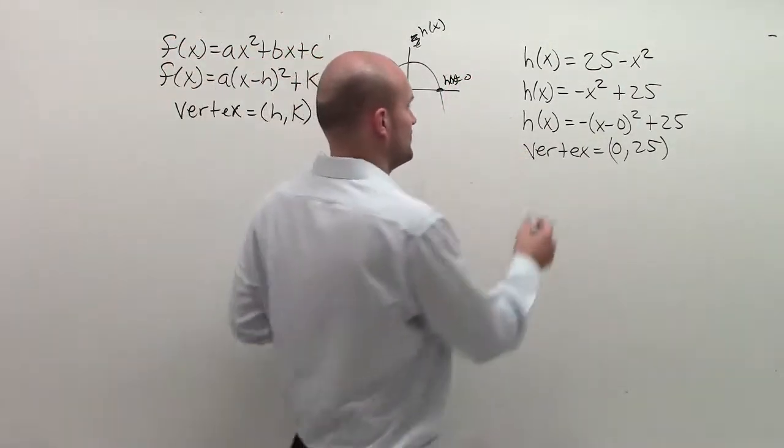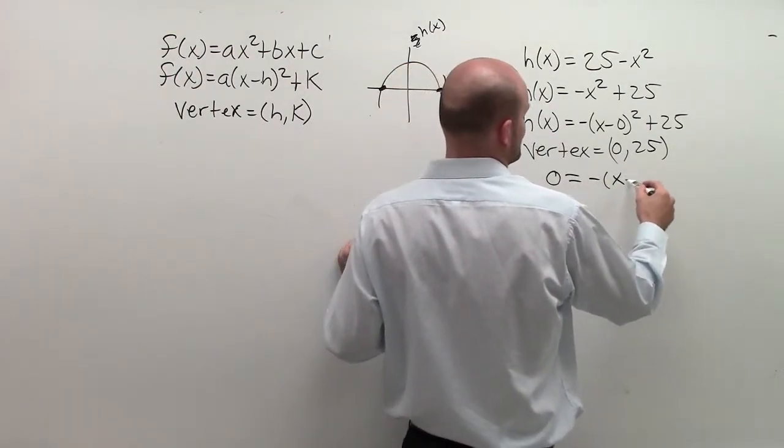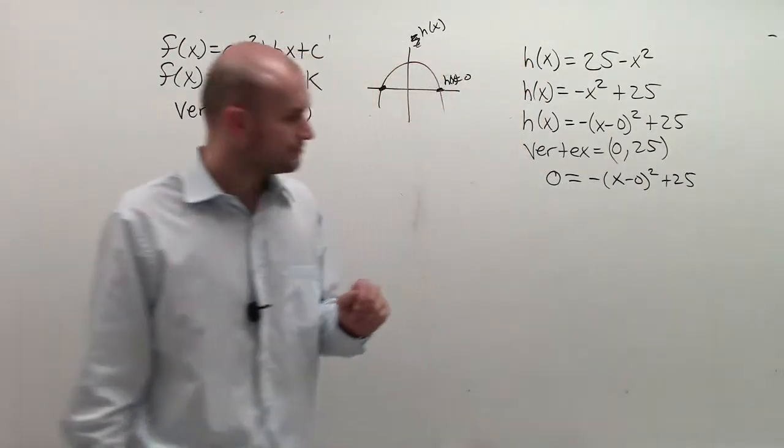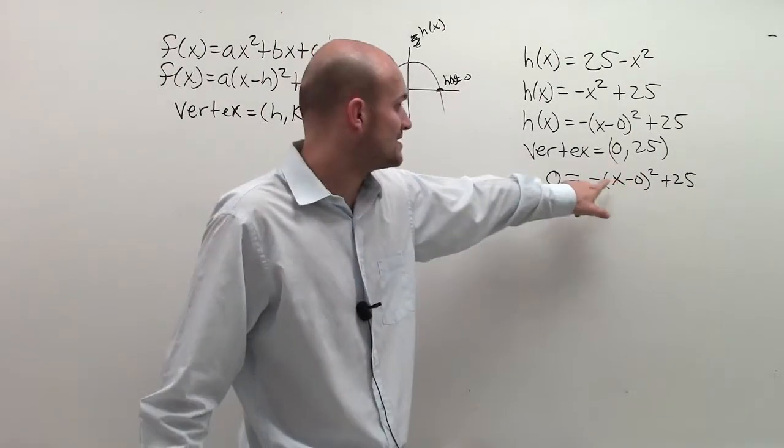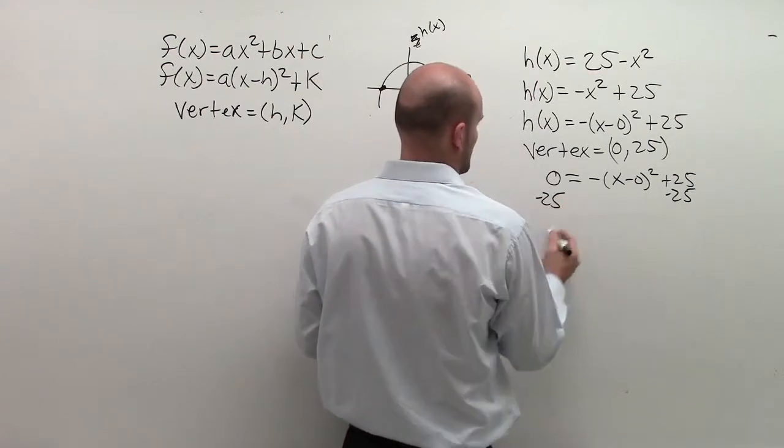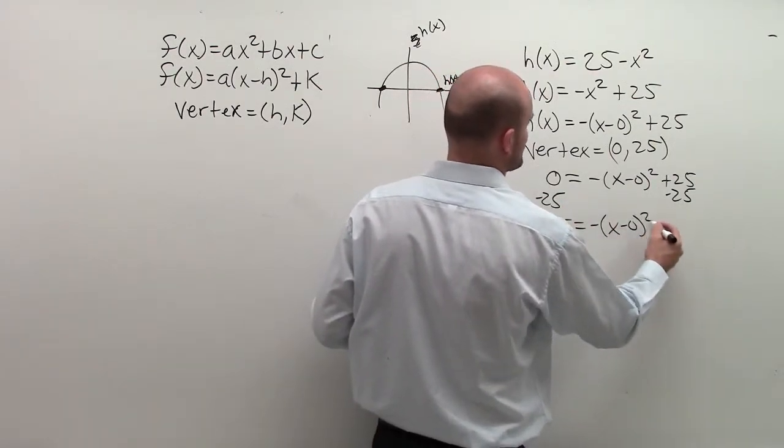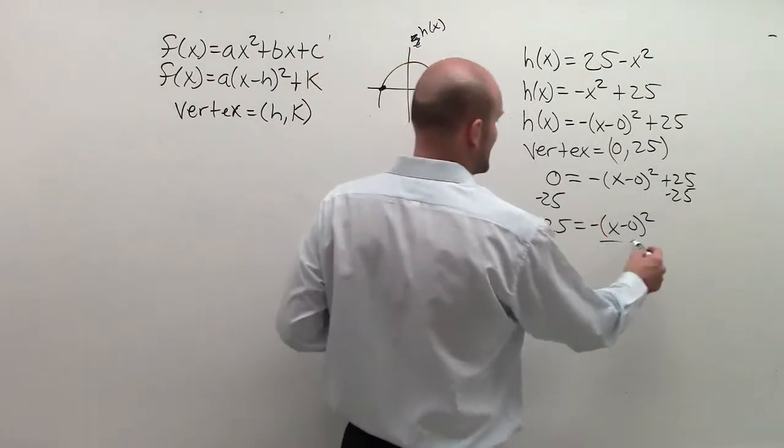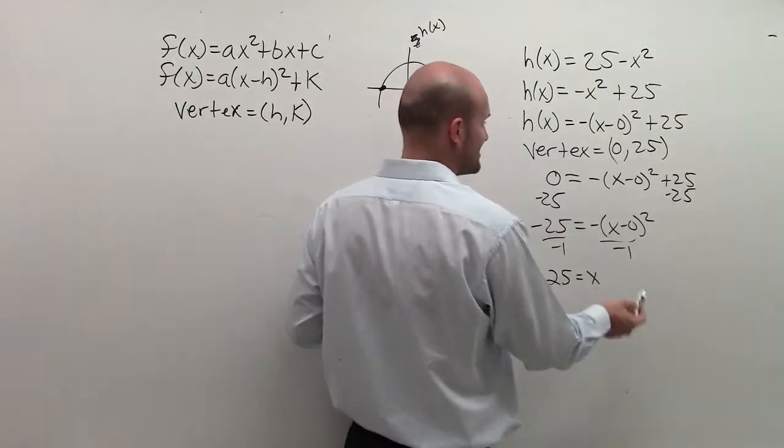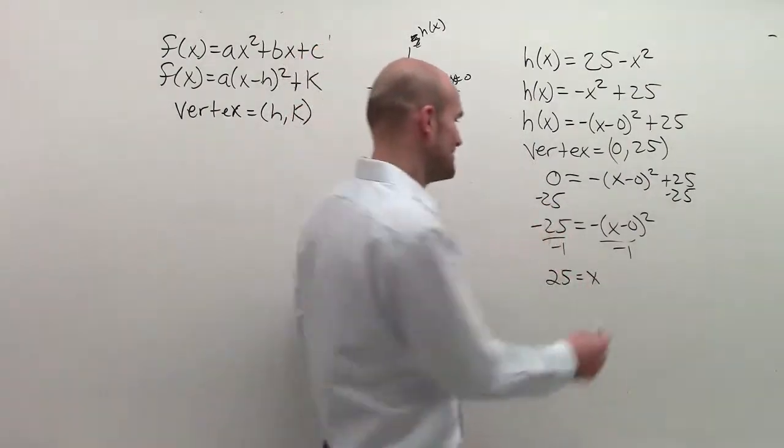So now what I can do is I can plug in h(x) equals 0. So I can write 0 in for h(x), negative (x minus 0) squared plus 25. So now what I do is I just need to isolate my variable. So I'm going to subtract 25. Negative 25 equals negative (x minus 0) squared. Now divide by negative 1, 25 equals x. I'm going to kind of stick it right in x minus 0. x minus 0 is x. So therefore, I get x squared.